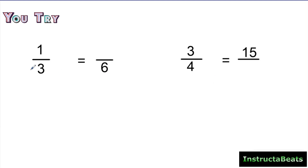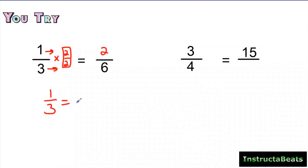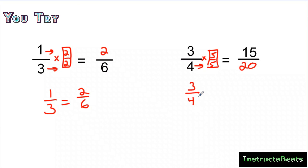Hopefully you paused it. For the first problem: I need to multiply 3 times 2 to make 6, so my big one is 2 over 2. One times 2 is 2, so one-third is equivalent to 2 sixths. For the second problem: 3 times what gives me 15? That's 5. So my big one is 5 fifths. Four times 5 is 20. So three-fourths is equal to 15 twentieths.